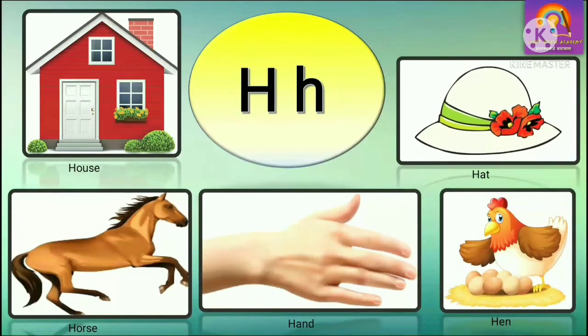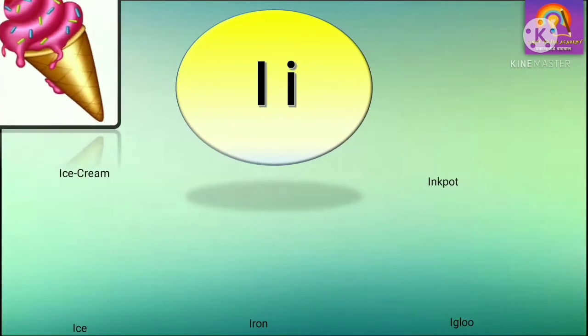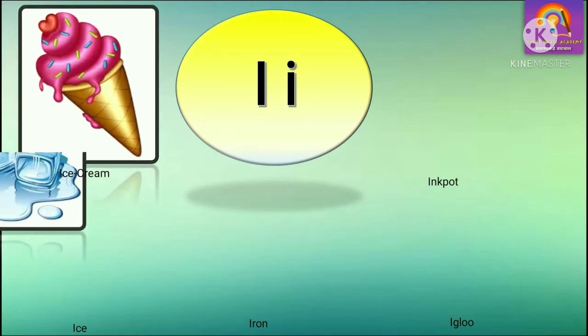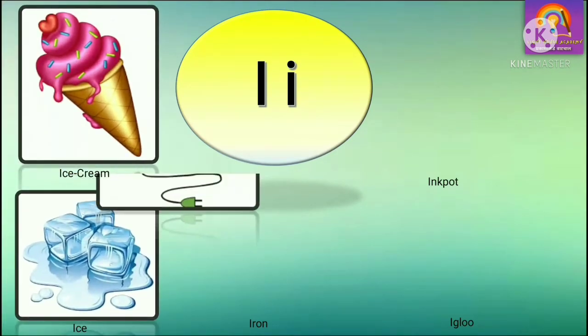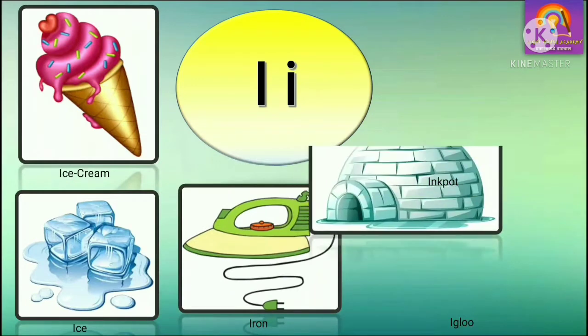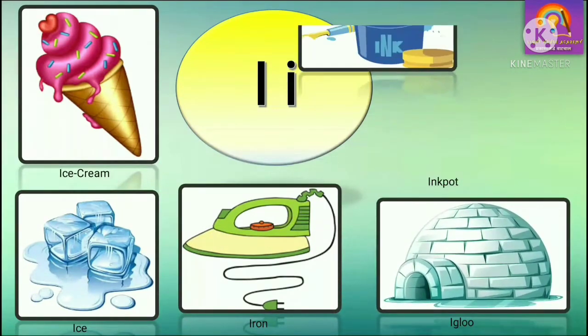Now H, I for ice cream, I for ice, I for iron, I for igloo, I for ink pot.